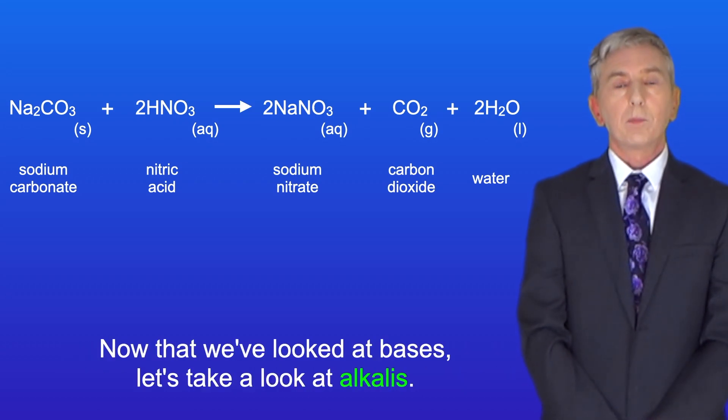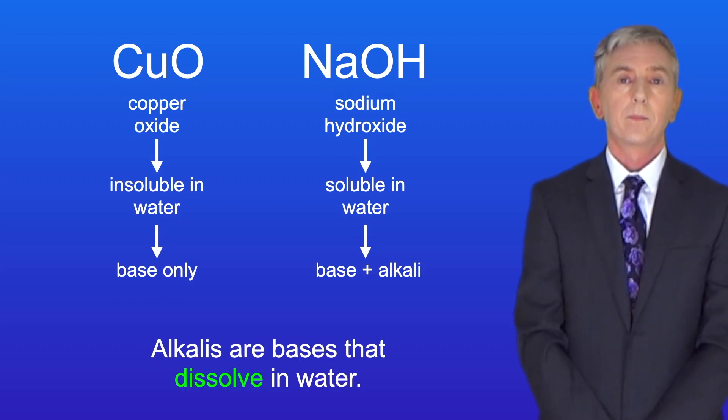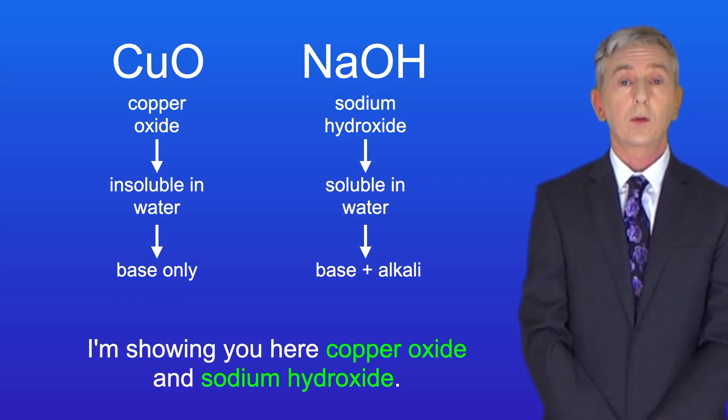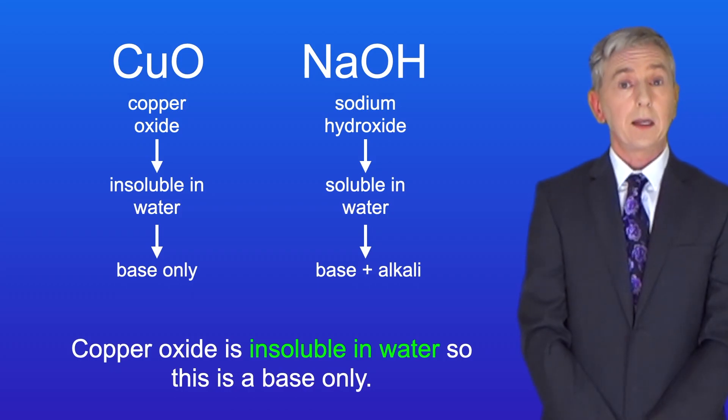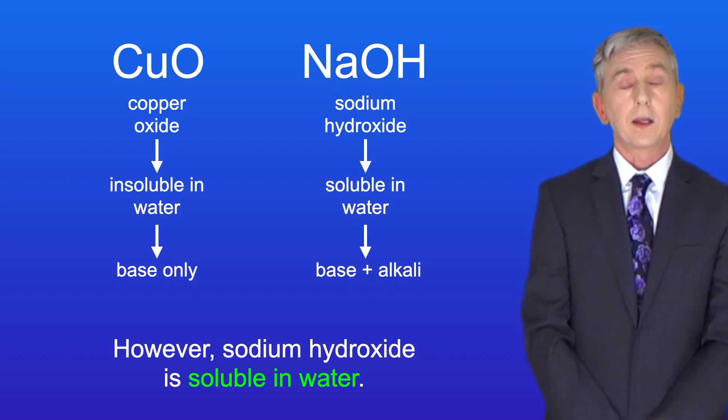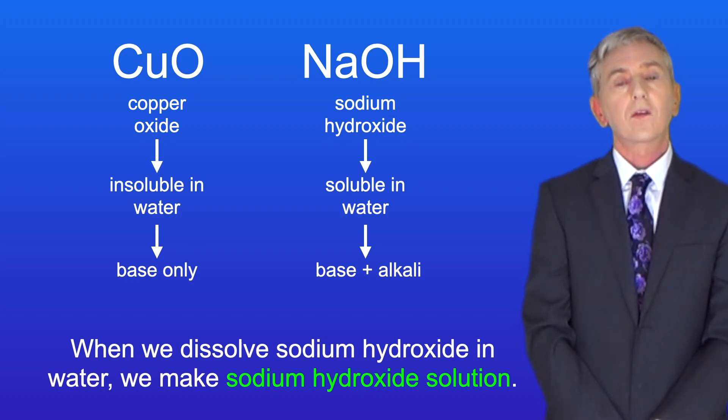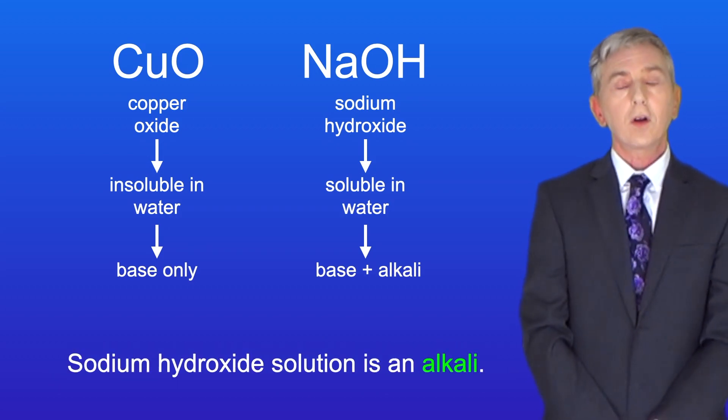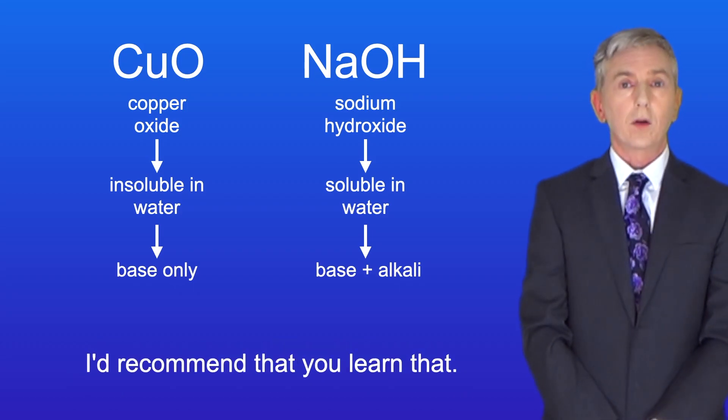Okay now that we've looked at bases let's take a look at alkalis. Alkalis are bases that dissolve in water. I'm showing you here copper oxide and sodium hydroxide. Both of these are bases as they neutralize acids producing a salt. Copper oxide is insoluble in water so this is a base only. However sodium hydroxide is soluble in water. When we dissolve sodium hydroxide in water we make sodium hydroxide solution and sodium hydroxide solution is an alkali. All group one metal hydroxides are soluble in water and can form alkalis and I'd recommend that you learn that.